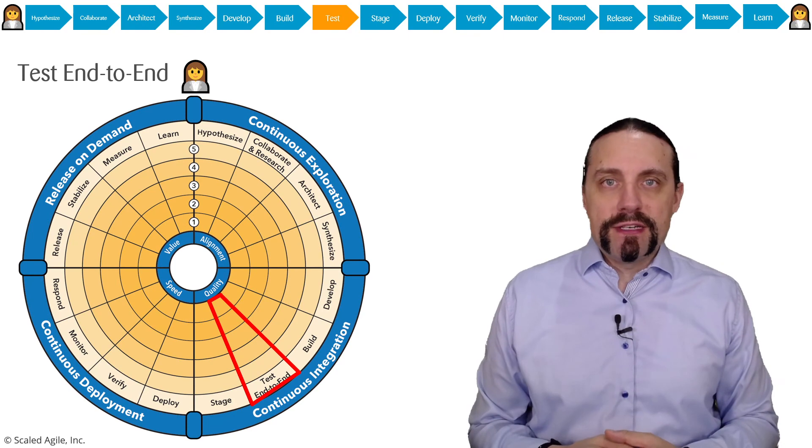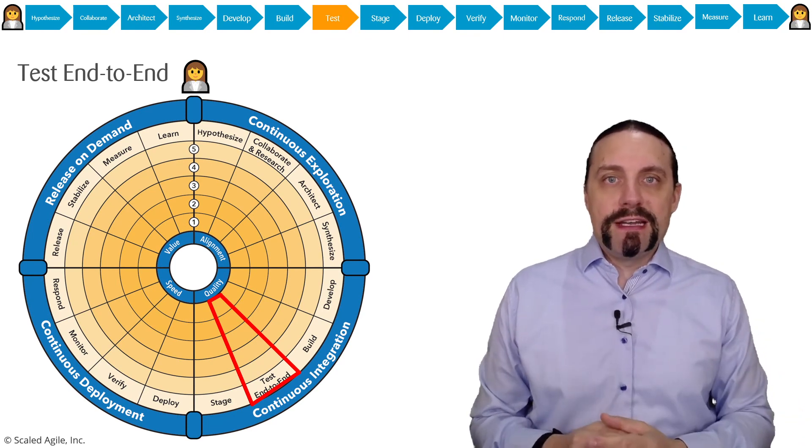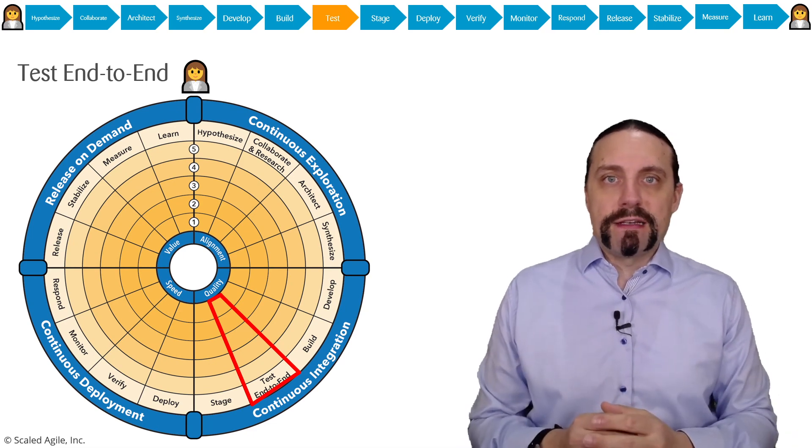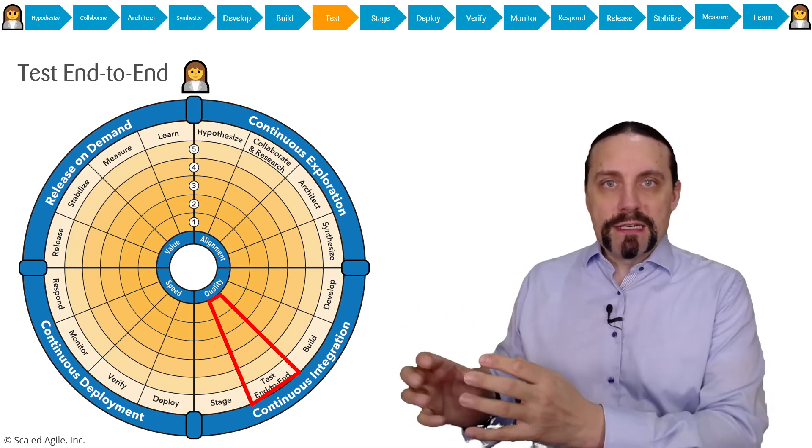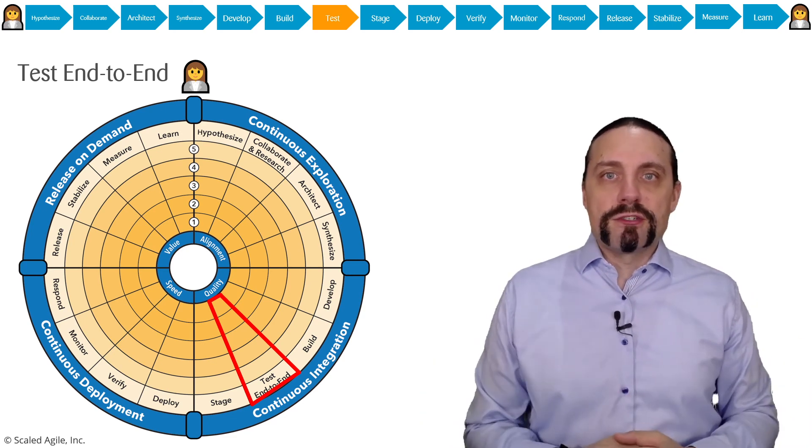Testing end-to-end means that we are going to validate our system end-to-end in a production-like environment which includes functional testing but also non-functional testing.